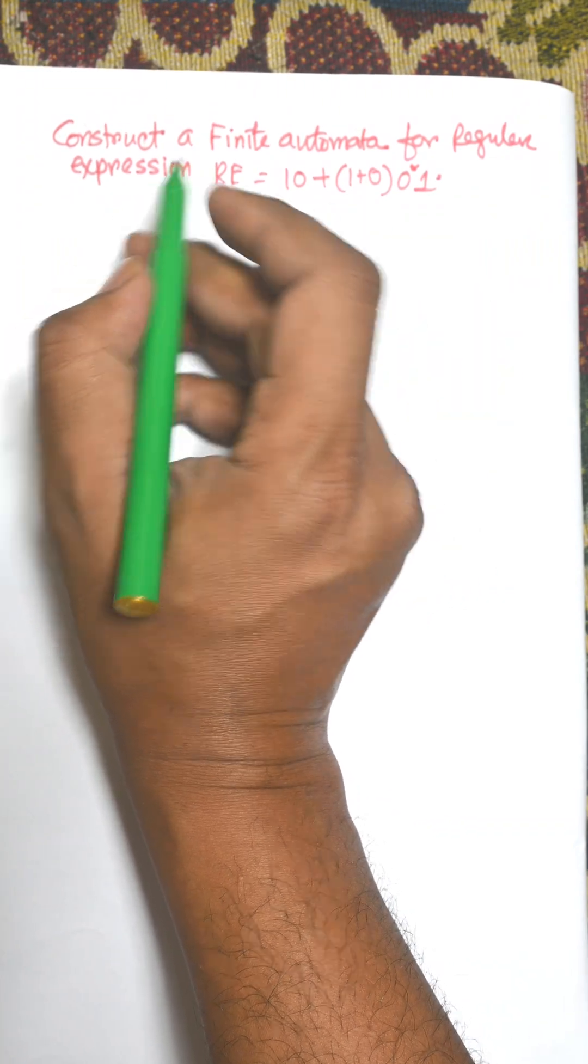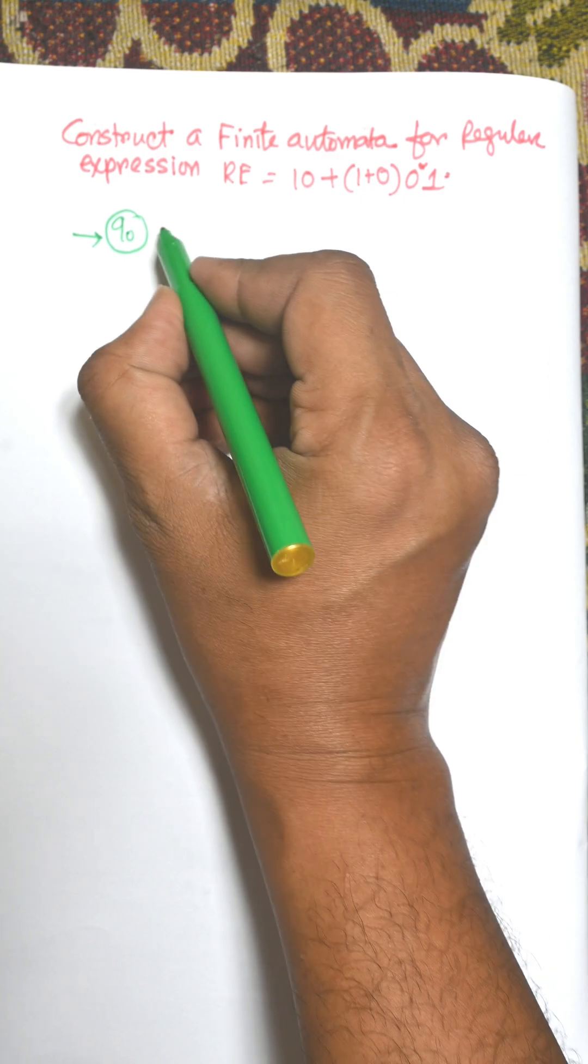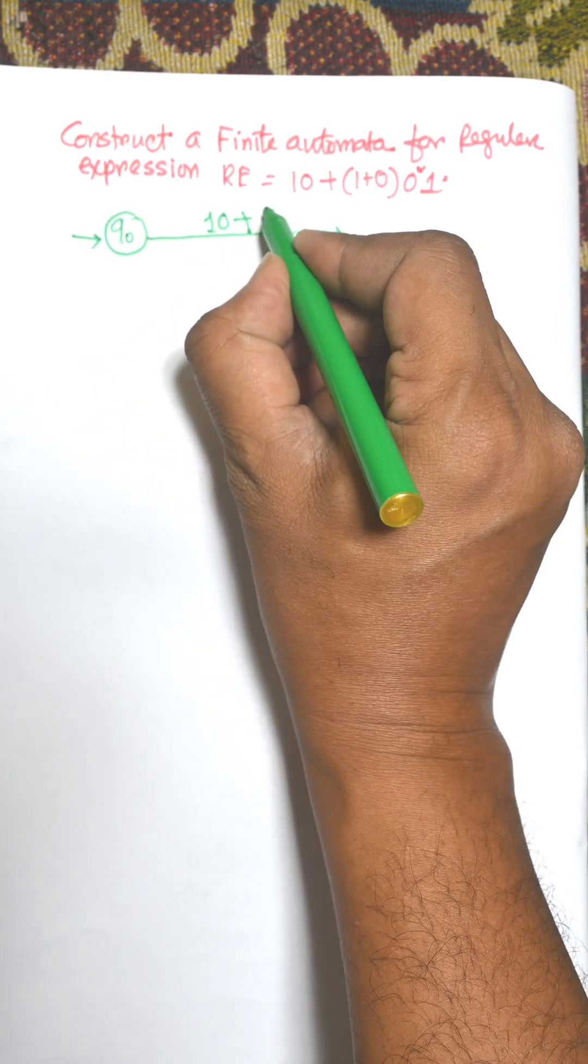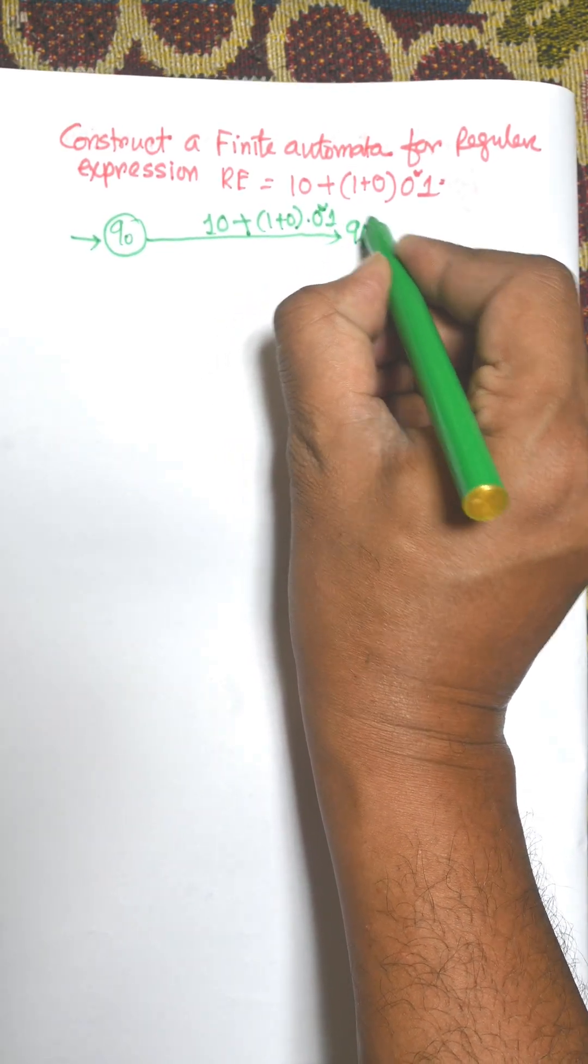Here a regular expression is given. We need to construct the finite automata. First of all, consider initial state q0 and consider this one as input: 10 plus (1+0)0*1 to final state.